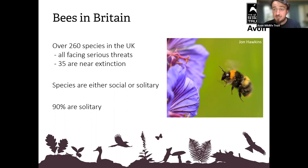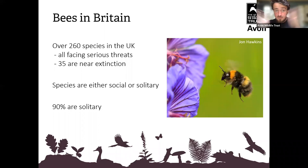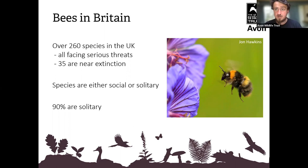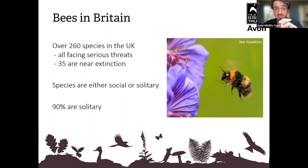In Britain, we've got just over 260 bee species — I don't like to put a specific figure on species numbers because species are discovered, reclassified, divided, amalgamated, and some go extinct. All face very serious threats, as do so many species of our wildlife — not just bees, not just insects. Many of the drivers of bee decline are the same drivers of decline for many other species. 35 of our bee species are now near extinction within Britain.